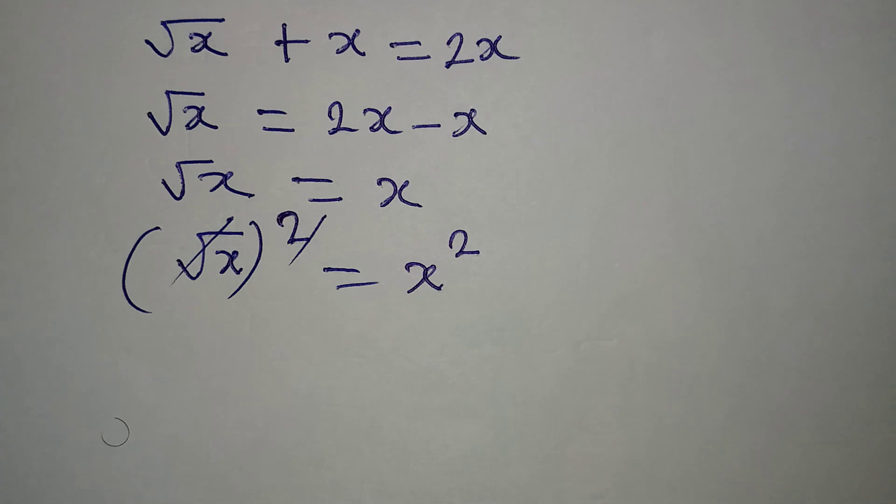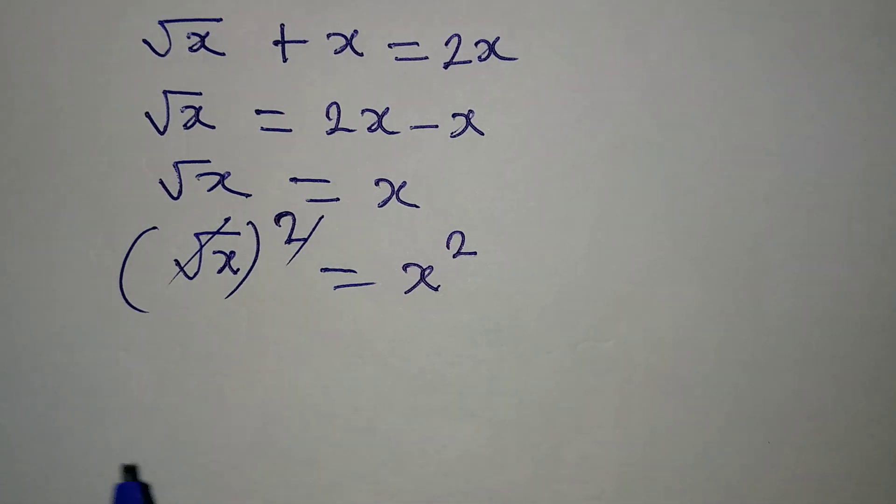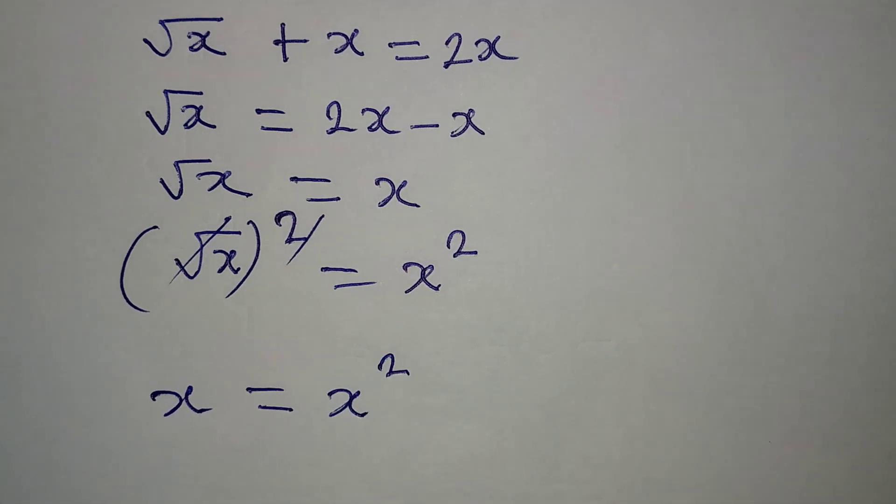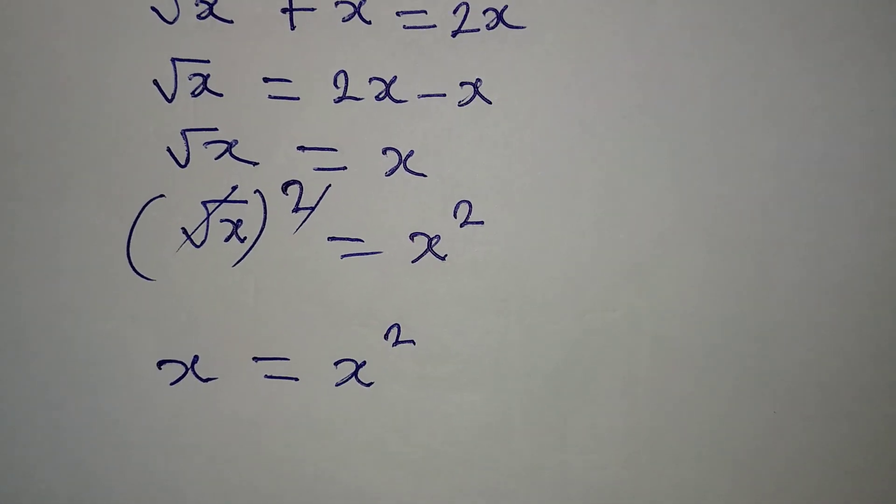Meaning that our x is now free, so we have x to be equal to x squared. Now what do we do? Bring everything to one side. Remember, this is the same thing as x squared equal to x, and then x squared minus x is equal to zero.